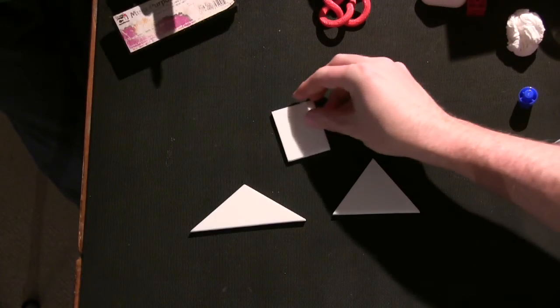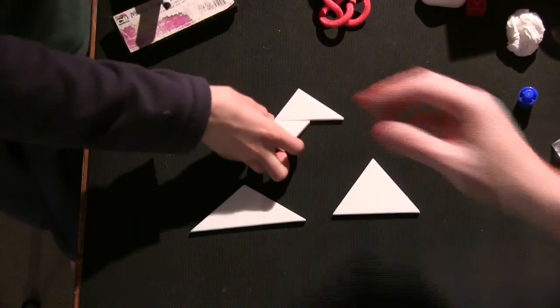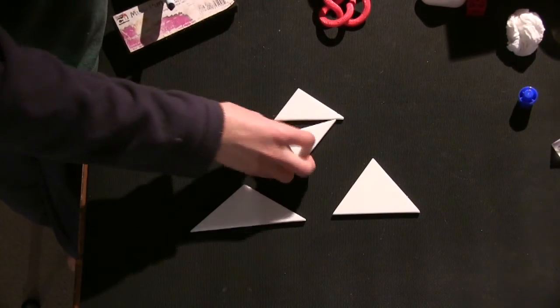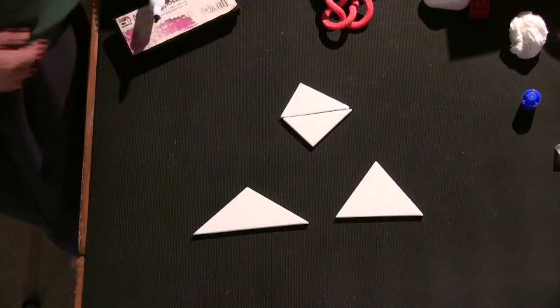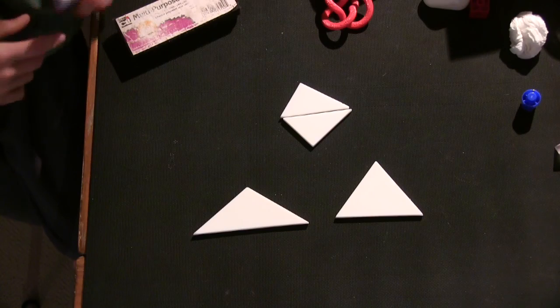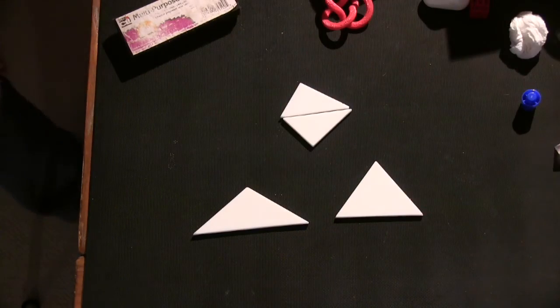And so obviously you can arrange these in other ways too, like a little rectangle. You can make a kite. Oh, you can make a kite, yeah. And all these shapes have the same area. Yeah. Cool. Alright. Good job. Great work.